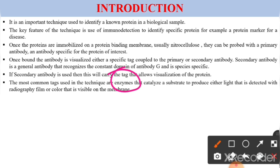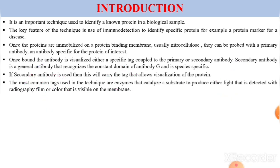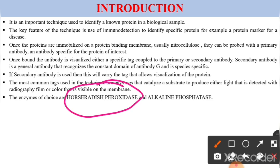The enzymes on the secondary antibody catalyze a substrate to produce either light — detected with radiography film — or color that is visible on the membrane. So if the antigen is present, the enzyme acts on the substrate and produces light or color, allowing us to visualize the color change. The enzymes most commonly used in the dot blot technique are horseradish peroxidase (HRP) or alkaline phosphatase.